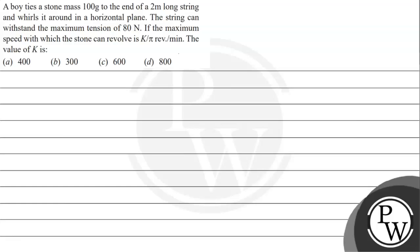Let's read the given question. The question says: a boy ties a stone of mass 100 gram to the end of a 2 meter long string and whirls it around in a horizontal plane. The string can withstand the maximum tension of 80 Newton. If the maximum speed with which the stone can revolve is k by pi revolution per minute, the value of k is: